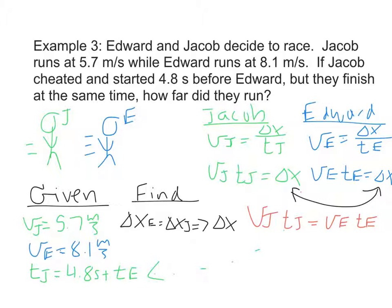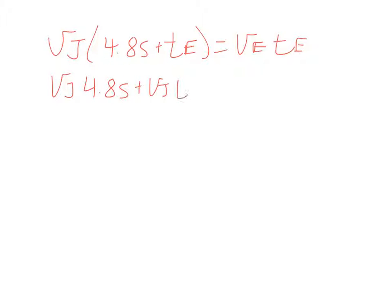So I'm going to make a substitution. Substituting in this expression where TJ equals 4.8 seconds plus TE for TJ. And I'm going to do this on the next slide since I'm out of room. So we get VJ substituting in for TJ, 4.8 seconds plus TE equaling VE TE. Now my only unknown is Edward's time, so we have to do the algebra and figure this out. So the first thing I'm going to do is distribute the VJ. So we get VJ 4.8 seconds plus VJ TE equals VE TE.